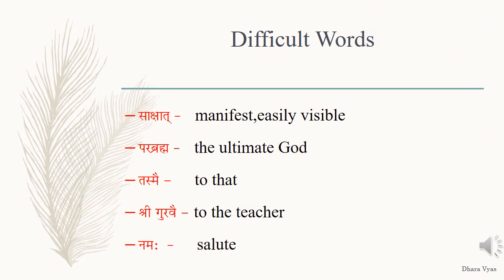I point out some difficult words from this shloka. Sakshat means manifest, easily visible. Par Brahma means the ultimate God. Tasme means to that. Shri Gurve means to the teacher. Namaha means salute.